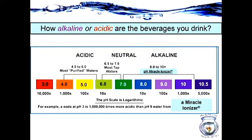Here's a pH scale ranging from a 3 pH to a 10.5 pH. And here you can see it's exponential — going from a 7 to 8 is 10 times more alkaline, or even up to a 10.5 which is 5,000 times more alkaline, versus from a 7 to a 3 pH which is 10,000 times more acidic.